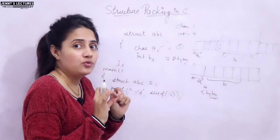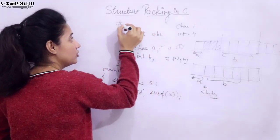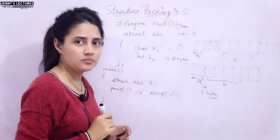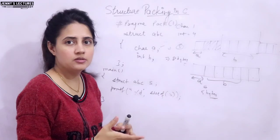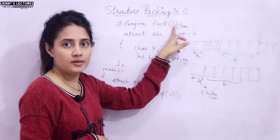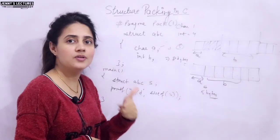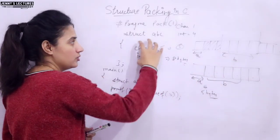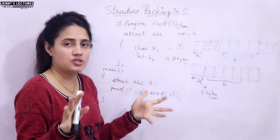To do structure packing, you just have to include one simple line in your program after the header files: #pragma pack(1). It's a directive used to turn on and turn off features in your program. Here we are turning on the packing feature — pack 1 — which means you have turned off the padding. Now the compiler will not insert those extra bytes. So the total memory allocated would be 1 byte for char and 4 bytes for int — only 5 bytes.